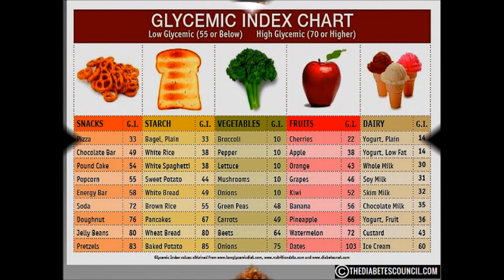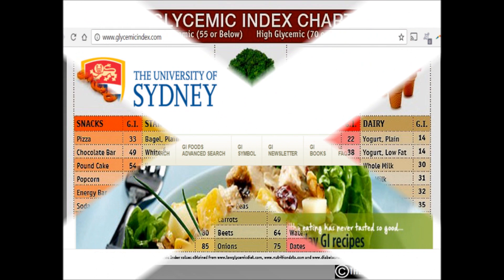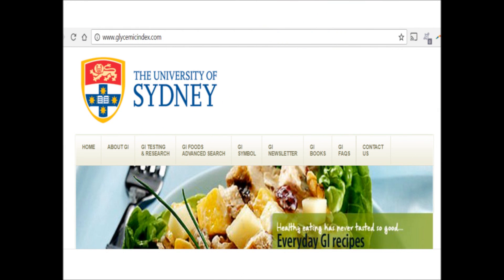Let me state upfront that while I believe the glycemic index is a very important tool for those of us with diabetes, I truly believe the glycemic load is a better tool. But the glycemic load uses the glycemic index in its calculation, therefore understanding the GI is also an important concept. To get the absolute best research material for this project, I will be quoting a lot of material from the official website of the International GI Database hosted by the University of Sydney.